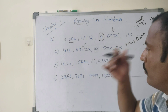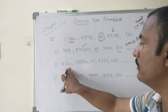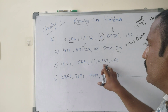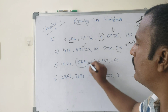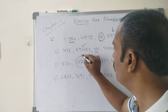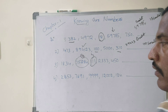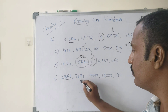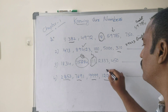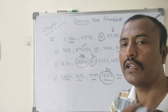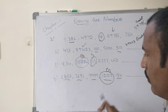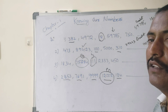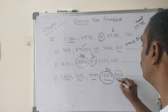Third example: 1834, 12284, 1112, 333, 450 — this is the greatest number, this is the smallest number. One more example: 2353, with 4 digits, 4 digits, 4 digits, 3 digits, 5 digits — this is the greatest number. The one with only 3 digits is the smallest number.